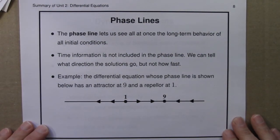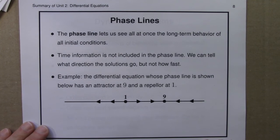Just as we did for iterated functions, we can draw a phase line for a differential equation, and it lets us see all at once the long-term behavior for all initial conditions. In a phase line, we lose time information. So for example here, I know that solutions move towards 9, but I don't know how fast.